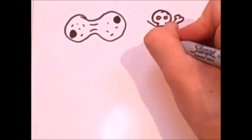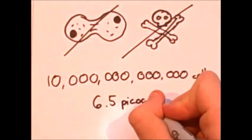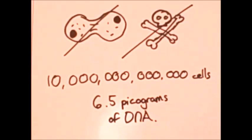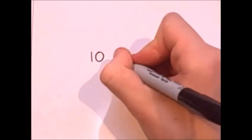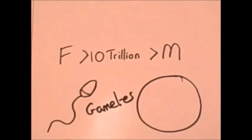Assuming that your cells are not replicating and dying, there are approximately 10 trillion cells in a single human, and each cell contains 6.5 pictograms of DNA. There is a little more if you're female and a little less if you're male, and also a little less for your gametes.